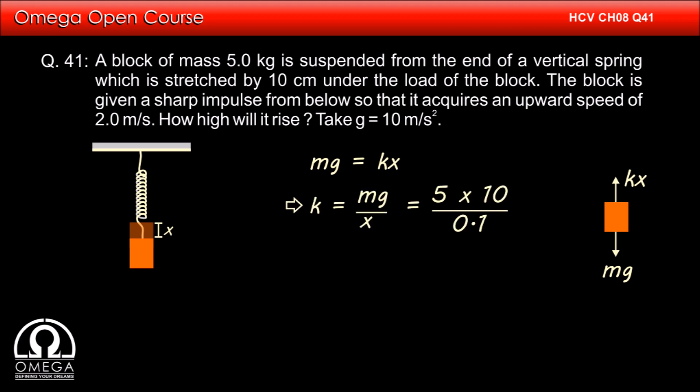Putting the values, we get k is equal to 5 into 10 divided by 0.1, that is 500 N per meter.